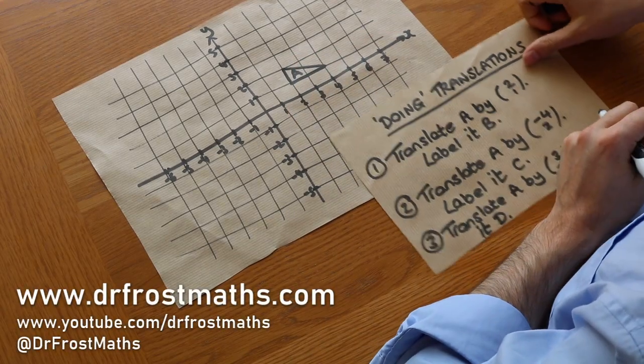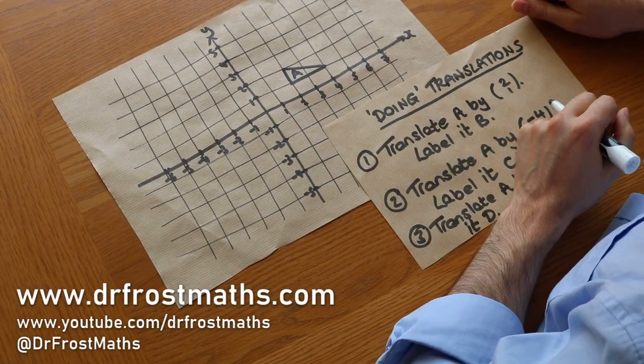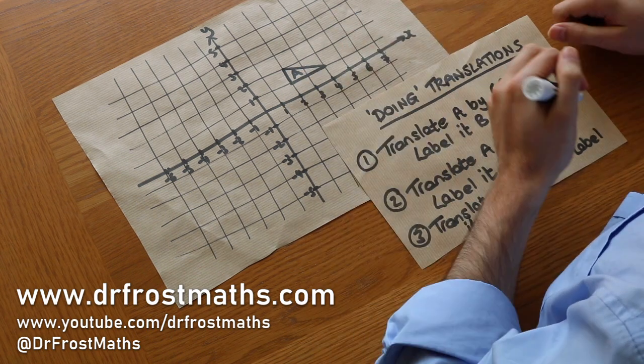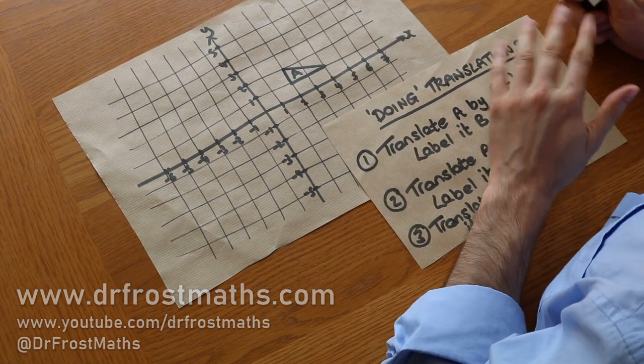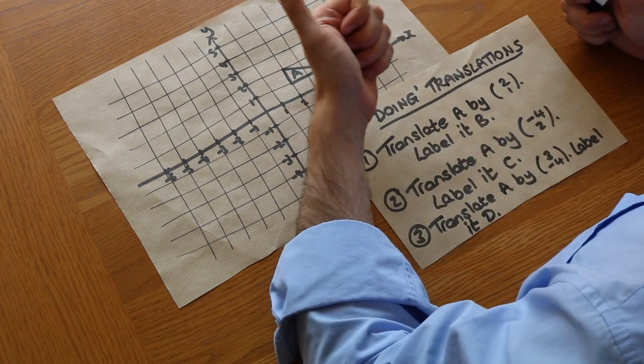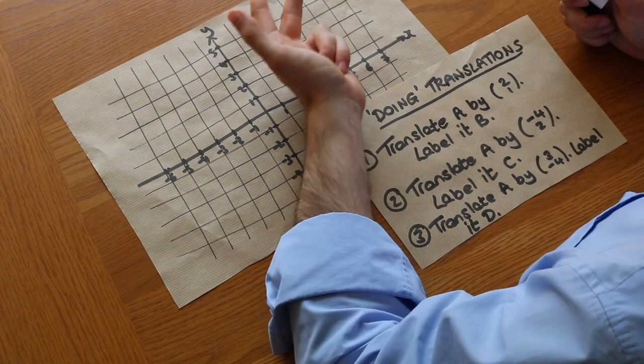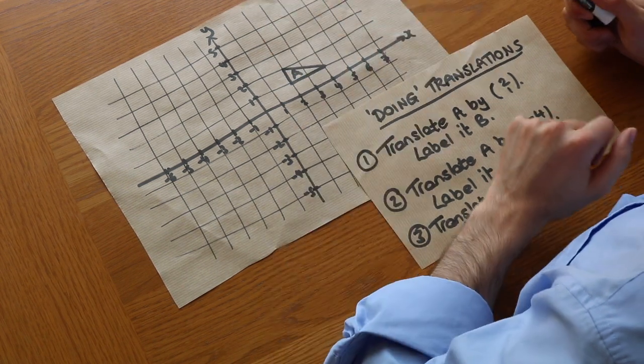Hello and welcome to this Dr. Frost's maths video on doing translations. Now a translation is just one of the four main types of transformation. So we've got translations, we've got reflections, we've got rotations and we've got enlargements.